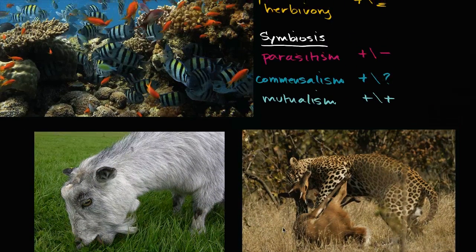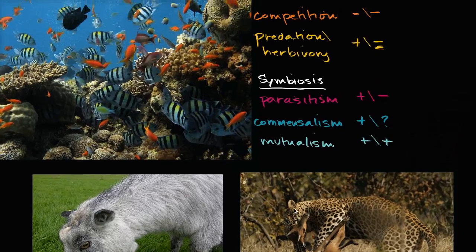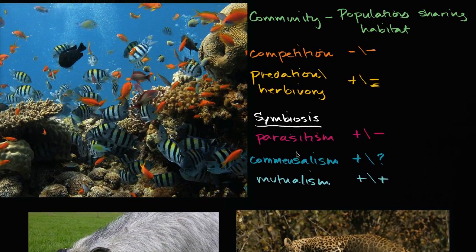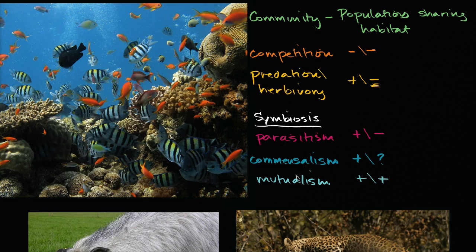So those are all the different types of inter-specific interactions. Look around you, and don't just limit yourself to animals — think about bacteria and plants. Within a habitat, consider all the different inter-species interactions and how you might want to classify them.